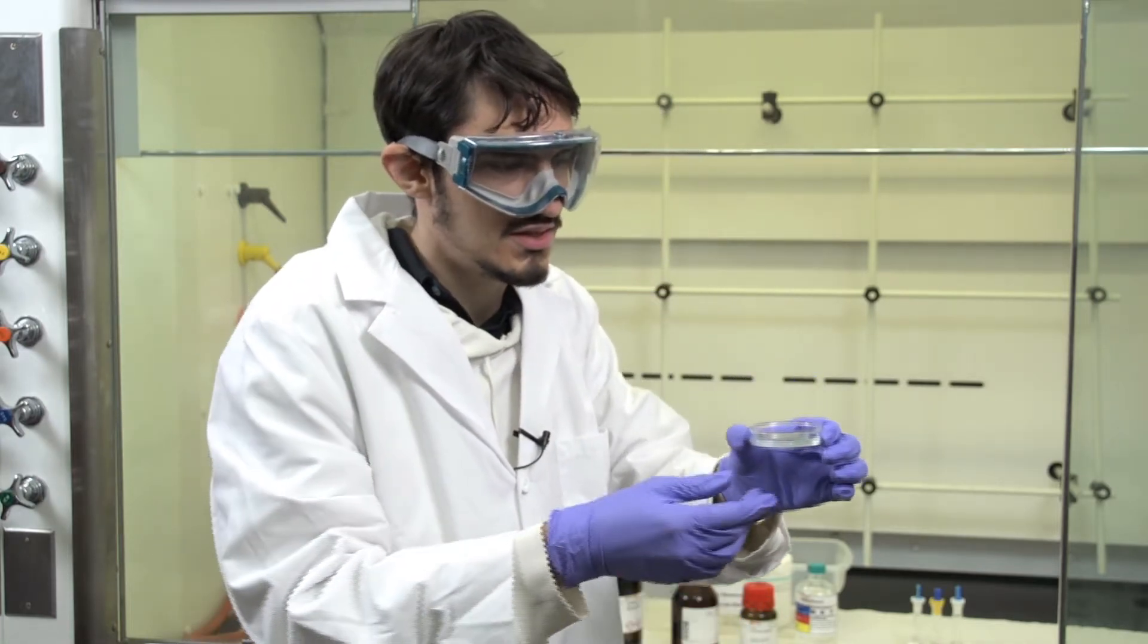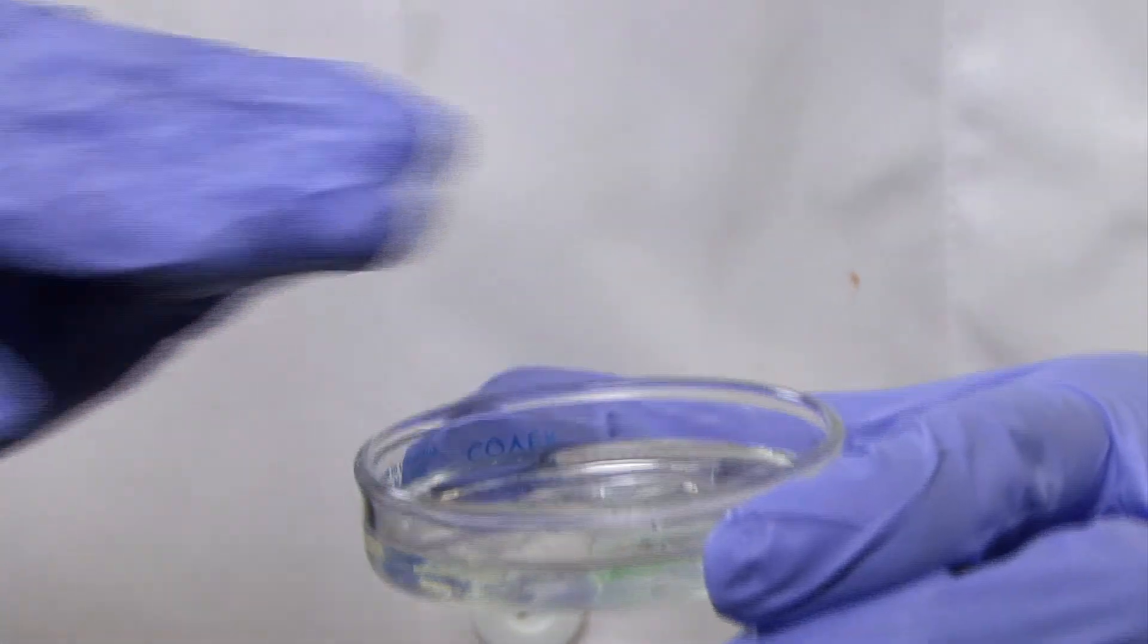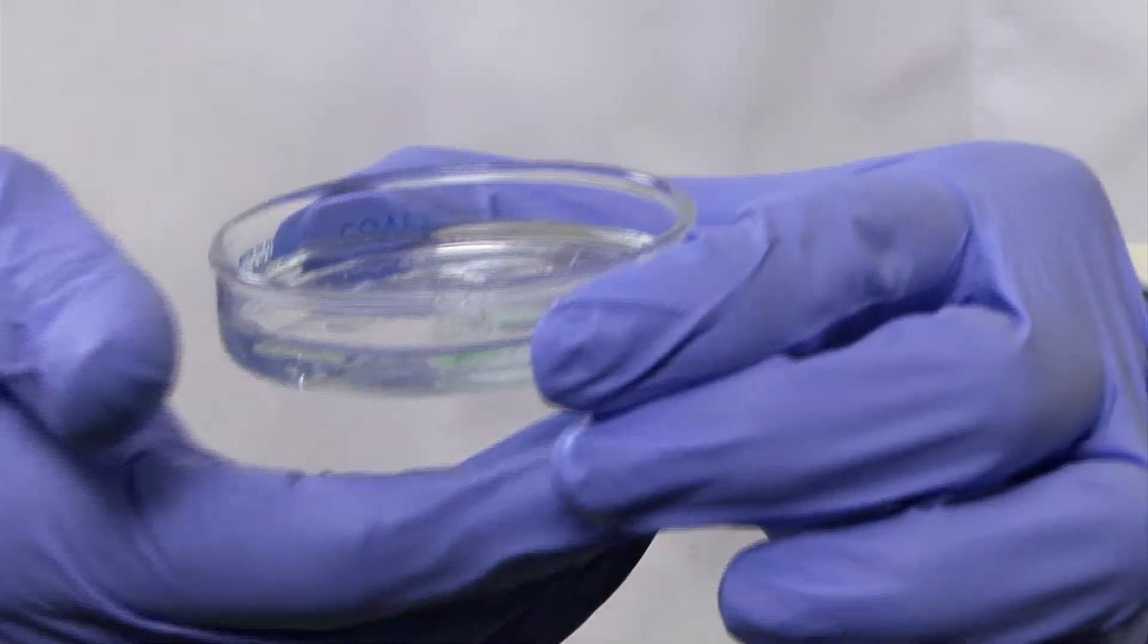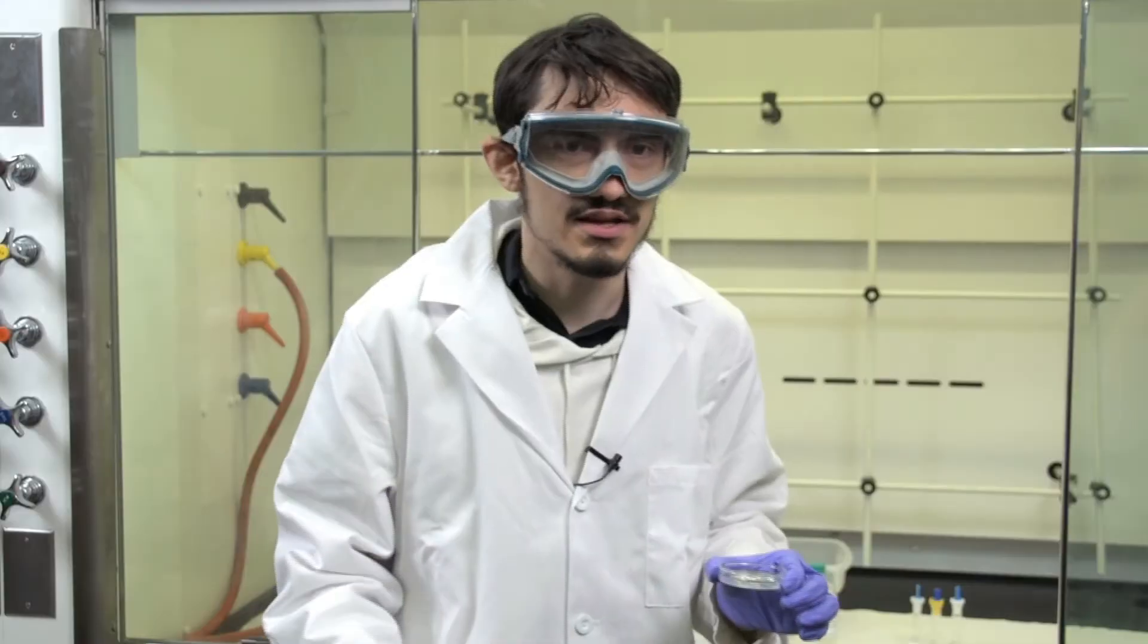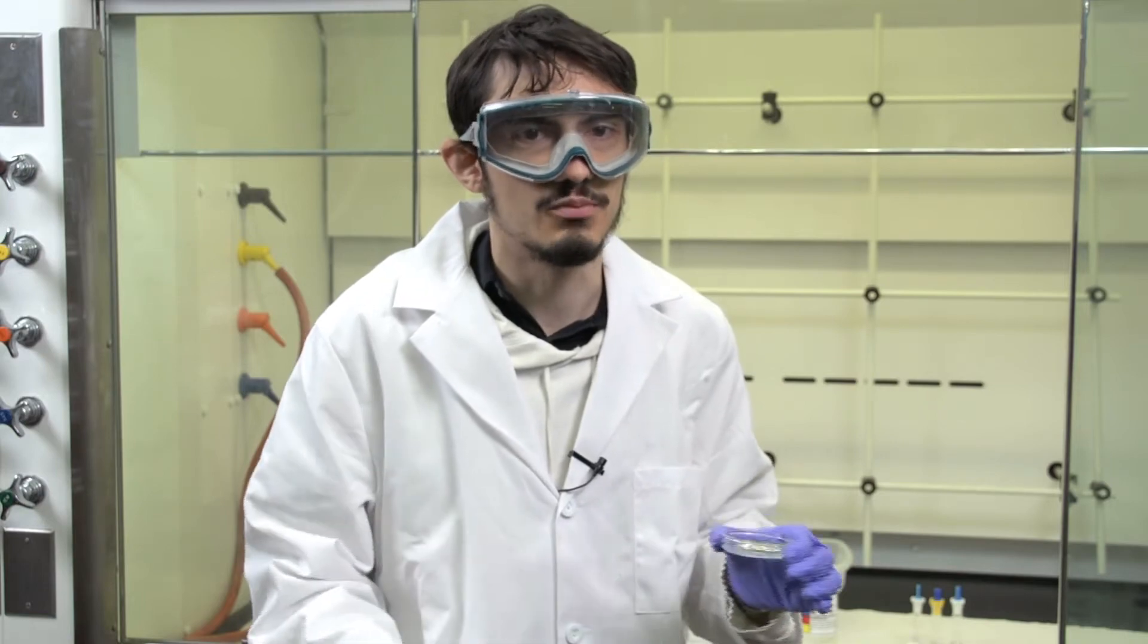Once you have poured over the CD it will look something like this. You'll have a relatively uniform layer of the polymer on top and you are now ready to place the Petri dish in the oven so that the polymer can be cured.